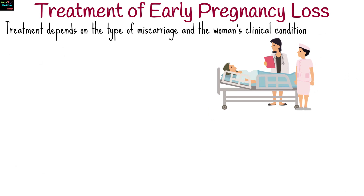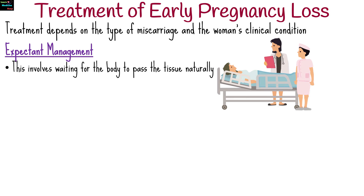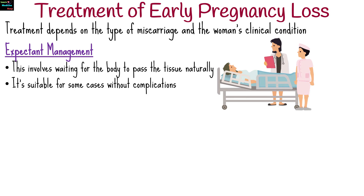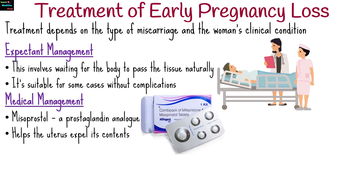Treatment depends on the type of miscarriage and the woman's clinical condition. There are three main options. Expectant management involves waiting for the body to pass the tissue naturally; it is suitable for some cases of incomplete or missed abortion without complications. Medications such as misoprostol, a prostaglandin analog, are used to help the uterus expel its contents.